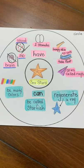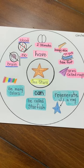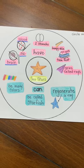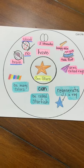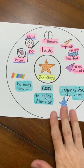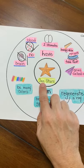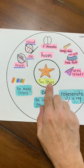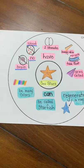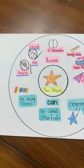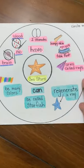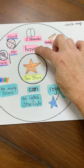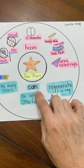Today we're going to create a couple of simple sentences using our sea star circle map. Here is the circle map and in the center I have sea stars. This is what we're talking about, and then everything around the outside of it are things that sea stars have or can.